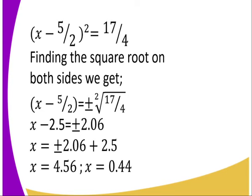From there, we find the square root on both sides, where we get x minus 5 over 2 equals plus or minus the square root of 17 over 4. We get x minus 2.5 equals plus or minus 2.06. x equals plus or minus 2.06 plus 2.5, so x becomes 4.56 or x becomes 0.44.